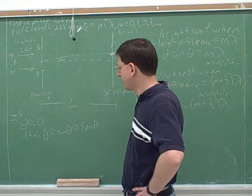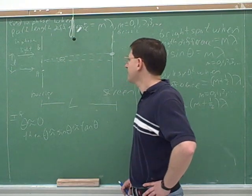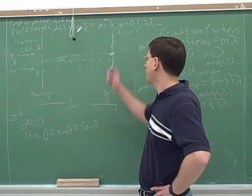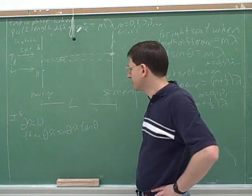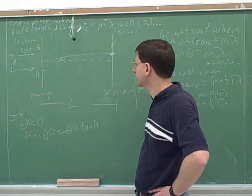So it's good to have these small angle approximations in mind. This happens whenever you're looking at spots that are very close to the center. Then we have all these things that are approximately equal to each other.